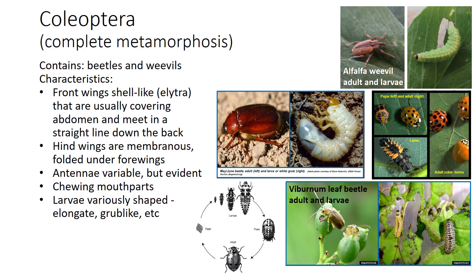The first order in this category is Coleoptera, which means sheath wing, referring to the hardened front wings that form a protective cover, also called elytra. The hind wings are membranous and used for flight. This group contains the beetles and weevils and is a diverse group. They have different antennae shapes and chewing mouthparts. There are both predators and many plant feeders in this group. The larval shape varies among species and can be elongate or grub-like, often with thoracic legs, but not always.